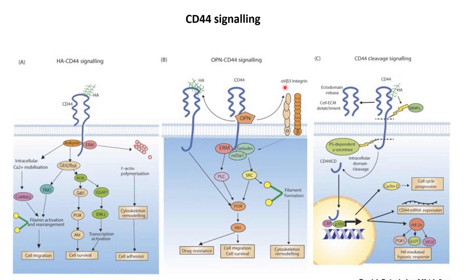The OPN-CD44 binding also triggers alpha-beta 3 integrin interactions. This triggers pathways that may lead to filament formation and cytoskeletal remodeling, so that cells can move and adjust to the tumor microenvironment efficiently.